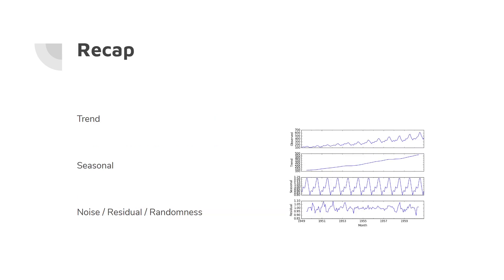To make a recap: in the previous video we talked about quantitative analysis of time series. When we decompose a time series we have three components — the observed component (the whole time series), the trend component (the long-term growth), the seasonal component (predictable variation within less than a year), and the noise or random component (the part we cannot predict). Today we are going to focus on the trend and noise components.